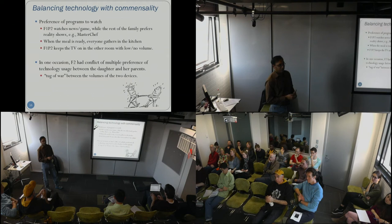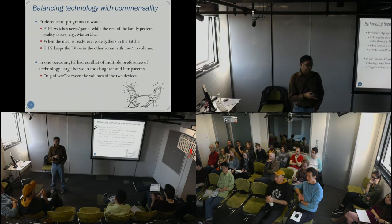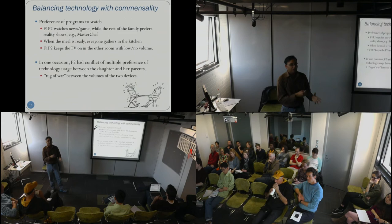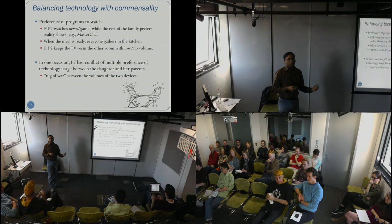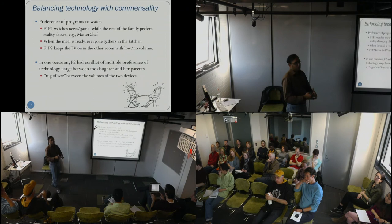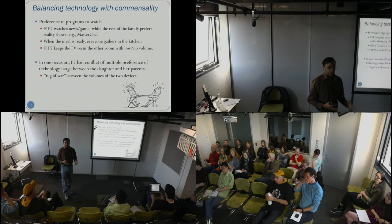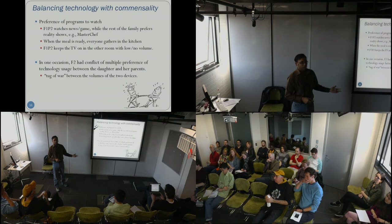For example, Family 1 has multiple televisions in the house and not all of them watch the same program. Before mealtime, the children and wife want to watch reality TV programs like MasterChef, while the husband wants to see sport or news. So before the meal, they watch in two different rooms — the lounge has sport, the kitchen television has the reality show. But when family meals begin, they all come together in the kitchen and eat together. They don't want to eat in two different places. However, the television in the lounge is not turned off — it is kept on with low volume or muted, but it keeps running.